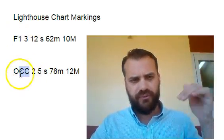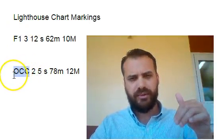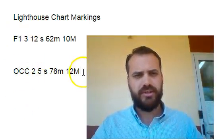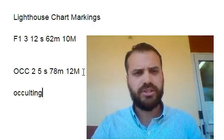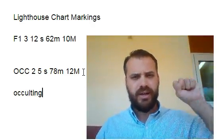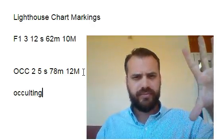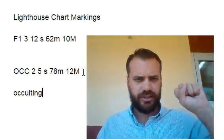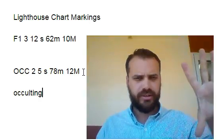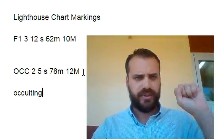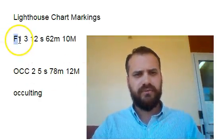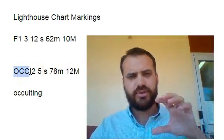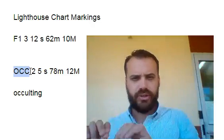If you compare that to a different lighthouse, this stands for occulting. Occulting means long light, short darkness — long light, short darkness, long light, short darkness. So that's the difference between flashing and occulting. Lighthouses will be either flashing or occulting; they can't be both.